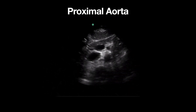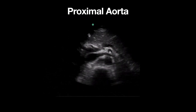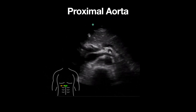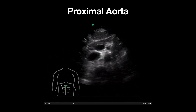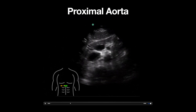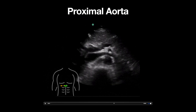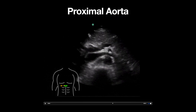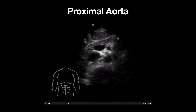This is an ultrasound clip demonstrating the proximal aorta. A curvilinear probe is used and placed in a transverse orientation in the patient's epigastric region, with the probe marker pointed towards the patient's right side.